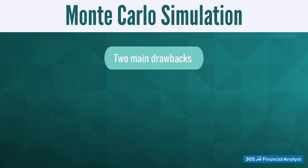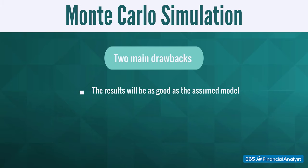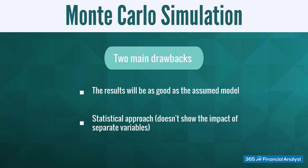Two main drawbacks should come to mind when performing this technique. First, as already mentioned, the results to be obtained will only be as good as the assumed model according to which the random output variable is distributed. And second, this is a statistical approach and not an analytical one — it doesn't allow us to examine the impact of some of the separate variables, but instead provides aggregate results.